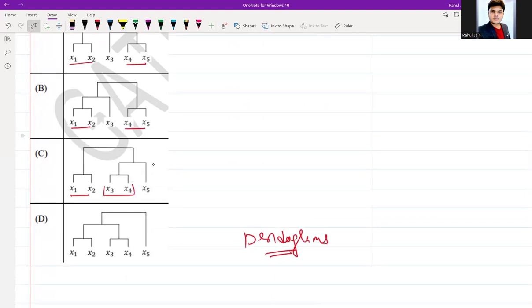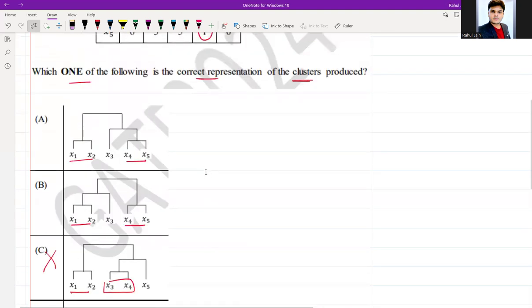x4 and x5 will be merged first before merging them because they are having minimum distance. I can cancel it. Similarly I can also cancel option D because x4, x5 have minimum distance compared to x3, x4. So C and D got cancelled, so A and B only remaining.